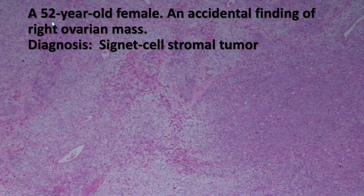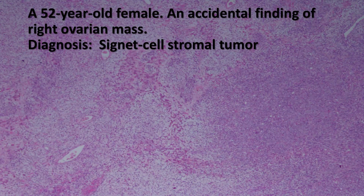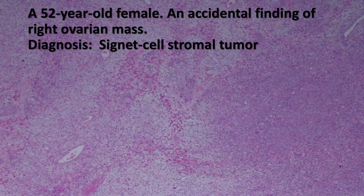To sum up, this is a case of a 52-year-old female patient with an incidental finding of a right ovarian mass. The diagnosis was consistent with signet cell stromal tumor — a completely benign tumor that may mimic signet ring carcinoma metastatic to the ovary. Knowledge of this entity and proper use of immunohistochemistry is extremely important. The signet cell stromal tumor is usually positive for cytokeratin but negative for EMA, unlike carcinoma. Additional stromal tumor markers such as SF-1 and calretinin are also extremely useful. Clinical history is important to rule out metastatic carcinoma from the stomach.